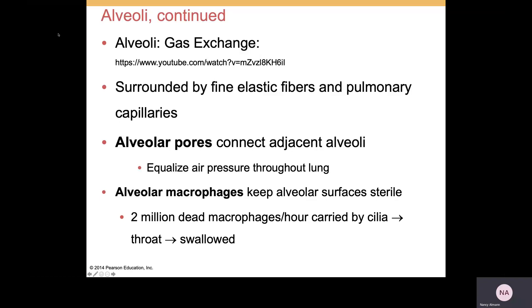The alveoli are surrounded by fine elastic fibers as well as pulmonary capillaries. Alveolar pores connect adjacent alveoli and help equalize pressure throughout the lung. Alveolar macrophages are important because they keep alveolar surfaces clean and sterile. Two million dead macrophages per hour are carried away by cilia up to the throat and swallowed — which is amazing.